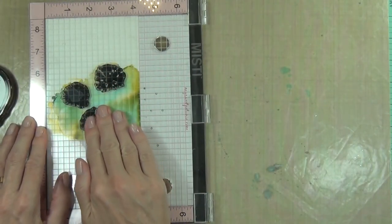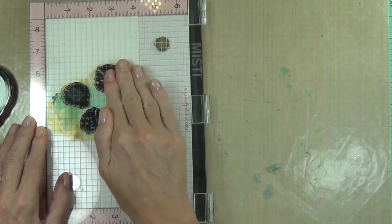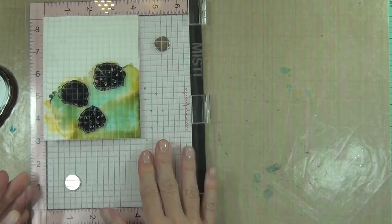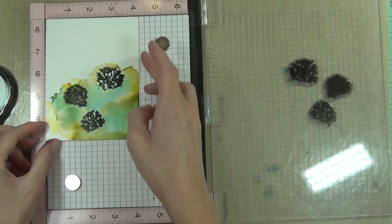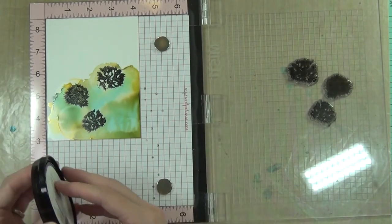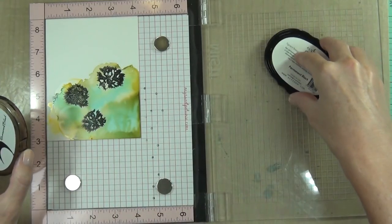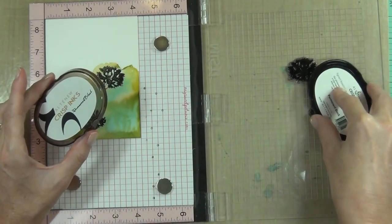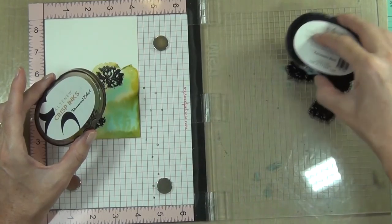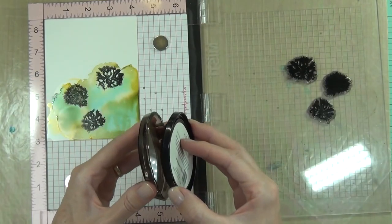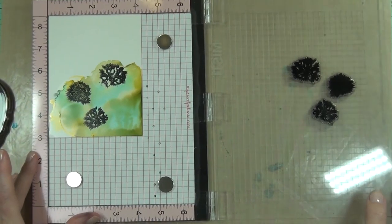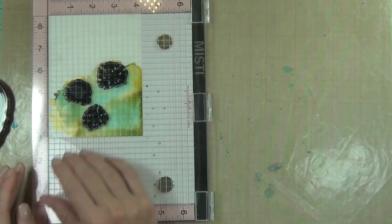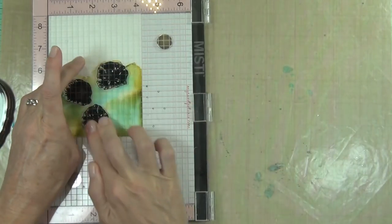And I'm using the permanent black here from Altenew, which is a permanent ink, and I'm being fairly generous with the ink here. And this is because I want it to look fairly dark and like a solid black silhouette.